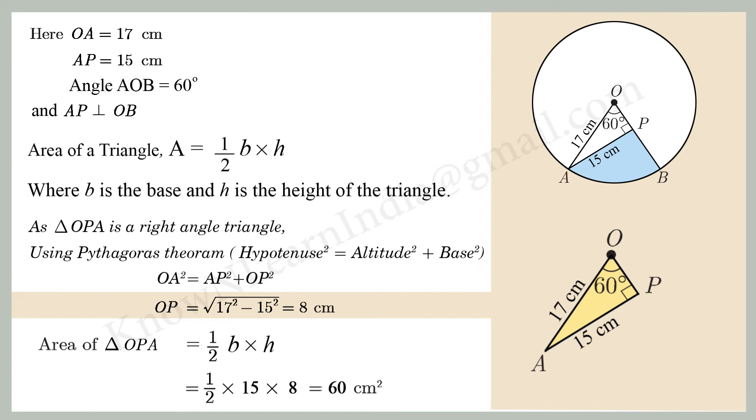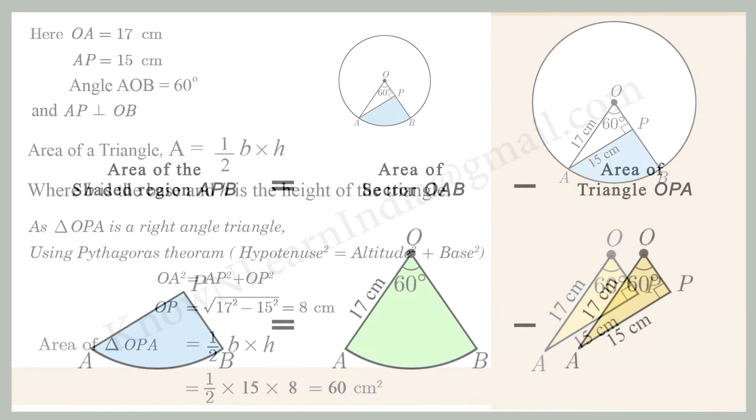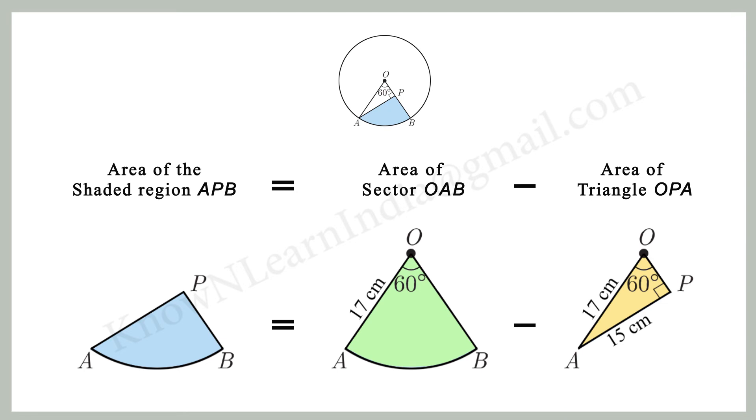So area of triangle OPA equal to half bh, that is half into 15 into 8 equal to 60 centimeter square. We found earlier area of the shaded region APB equal to area of sector OAB minus area of triangle OPA.